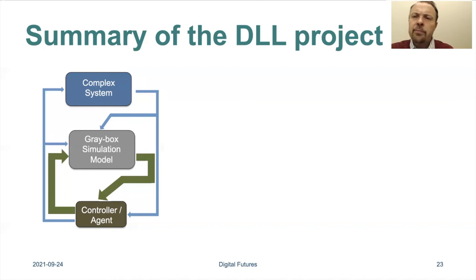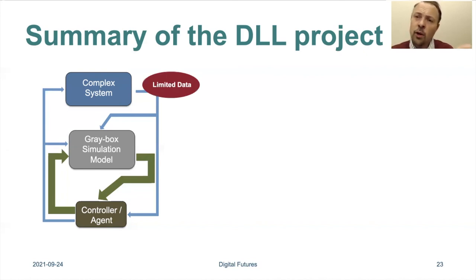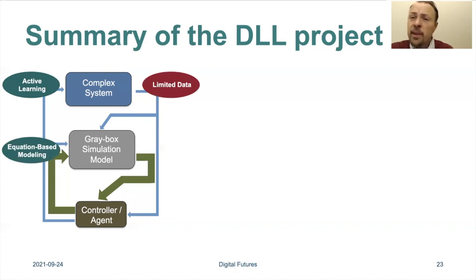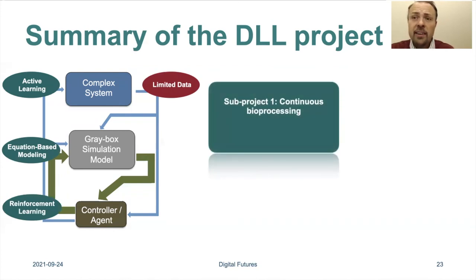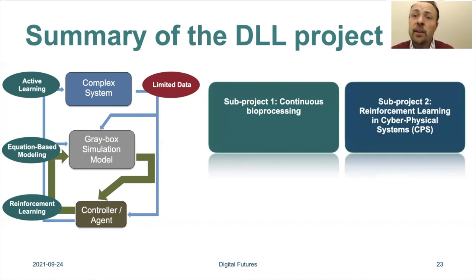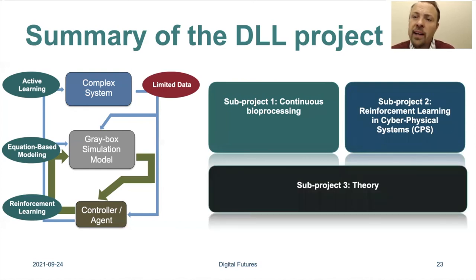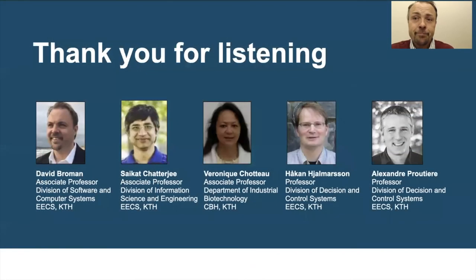In summary, the whole DLL project is about machine learning where you only have a limited amount of data — meaning you can only probe and sample the system a limited number of times. This involves active learning, equation-based modeling and simulation, and reinforcement learning. The project is divided into three sub-projects: continuous bioprocessing, reinforcement learning of cyber-physical systems, and the theory part that binds it all together. Thank you for listening.